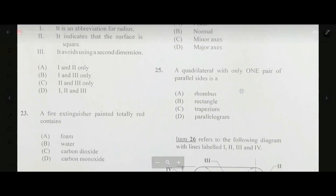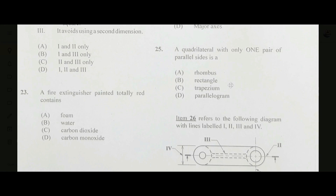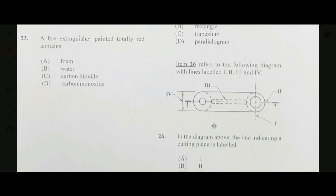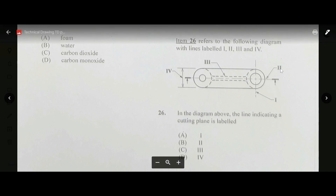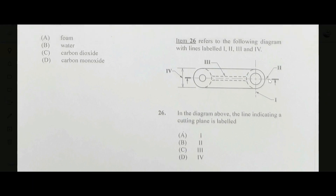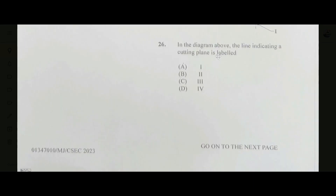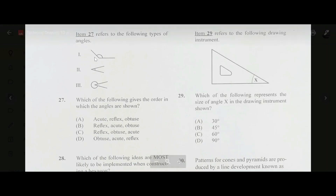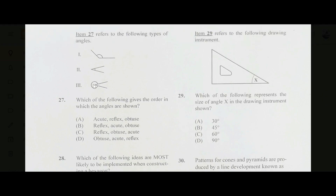Number twenty-five: a quadrilateral with only one pair of parallel sides is a trapezium — answer C. Number twenty-six: in the diagram, the line indicating a cutting plane is labeled — looking closer, line two actually points directly at the cutting plane line, so the answer is B, two. Number twenty-seven: the first angle is obtuse, the second is acute, and the third is reflex — the answer is D, obtuse, acute, reflex.